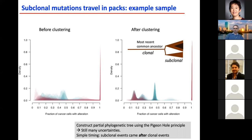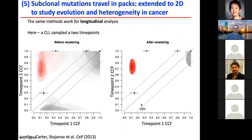We extended this to two-dimensional space, applying clustering in two dimensions. We could see that some subclones that existed at time point one at only roughly 10% of cells increased to 75% at a later time point. Using these two time points, we could start to learn the dynamics of cancer — clones that are growing and clones that are decreasing.